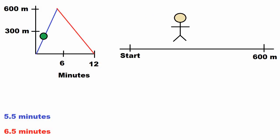So let's say you're going to go on a walk. It takes you 5.5 minutes to go 600 meters one way. Then it takes you 6.5 minutes to go 600 meters back.